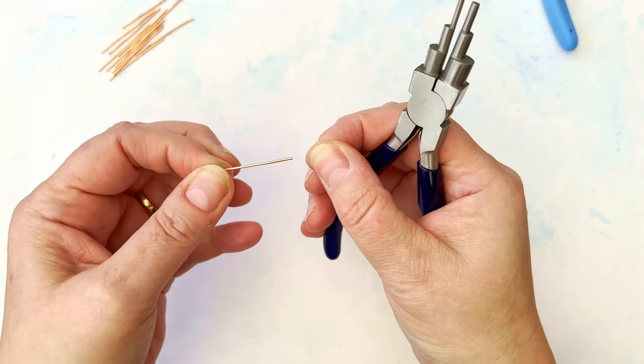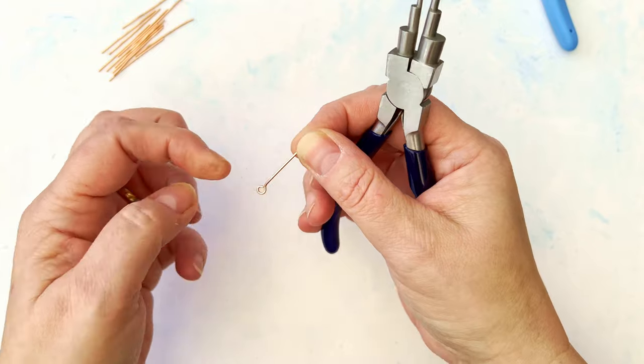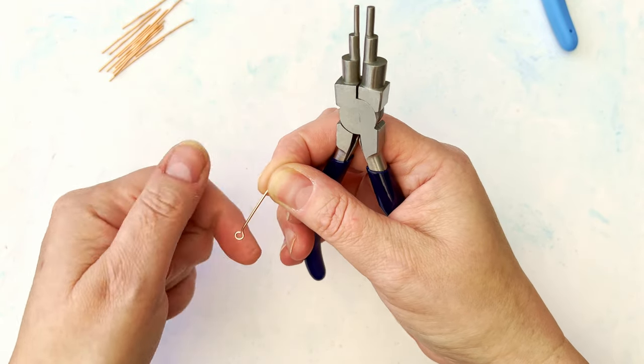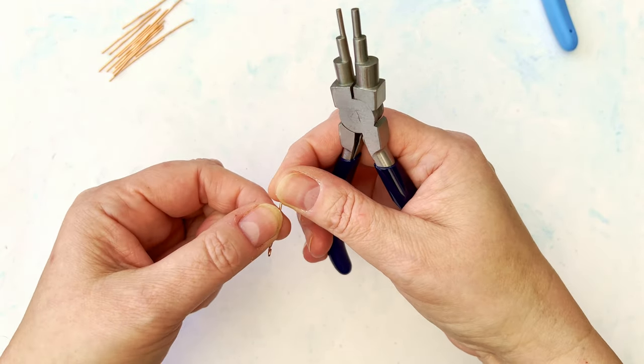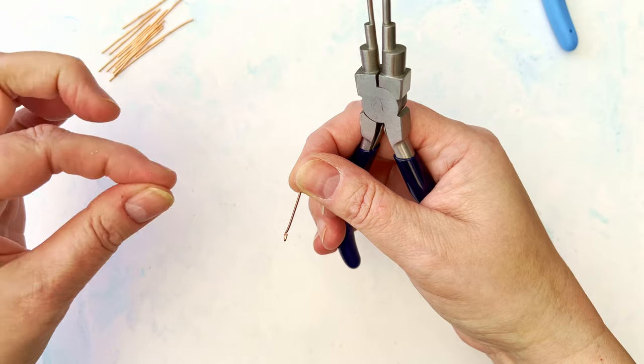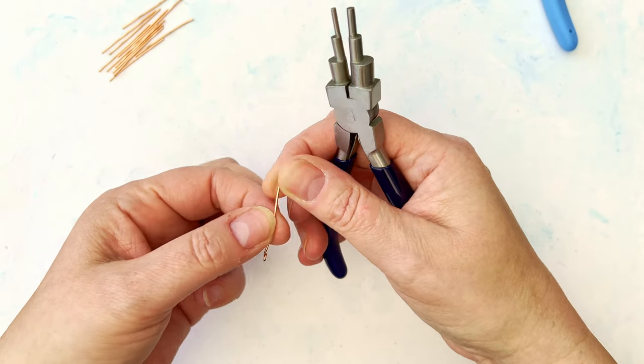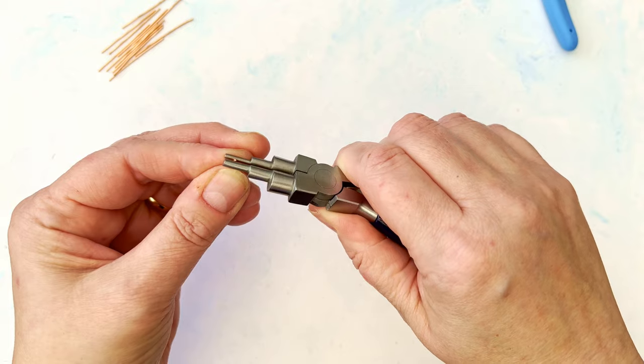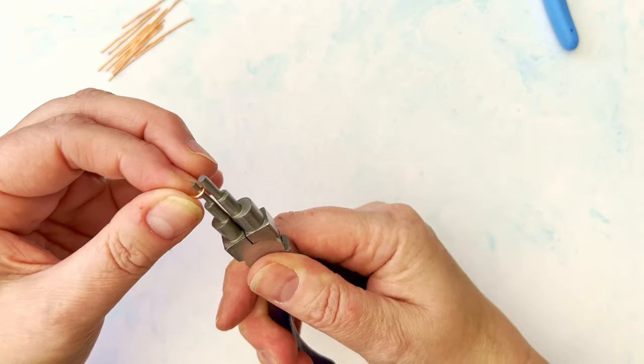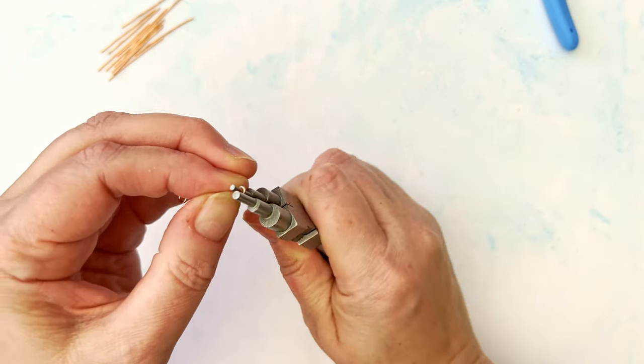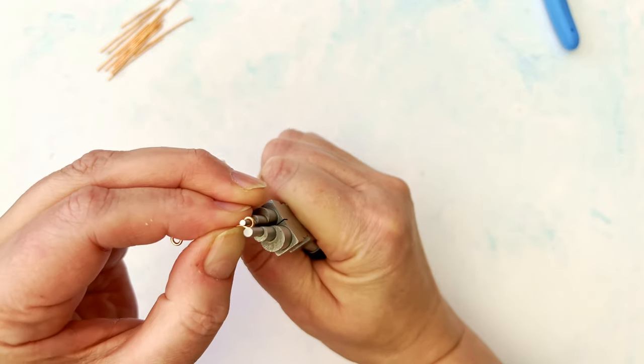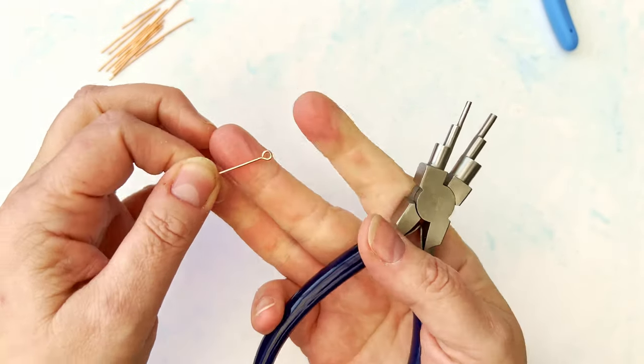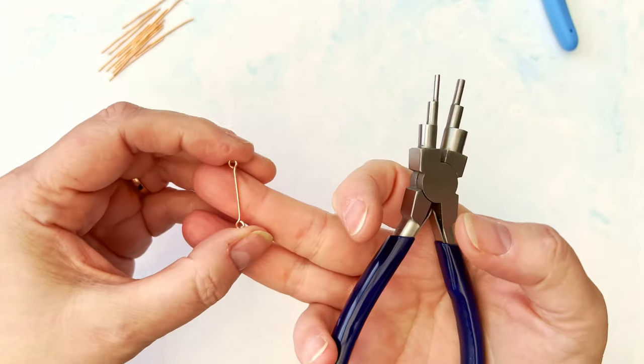You want to do the same on the other side, but it wants to go the opening wants to go in the opposite direction. The reason for that is because when we make the link it gives it a bit more stability. Exactly the same on the other side, ensuring that the openings go in the opposite direction. So make a little bend in it so you've got essentially a double eye pin.